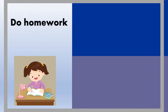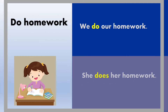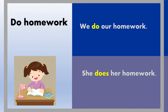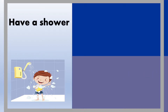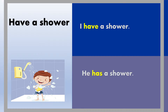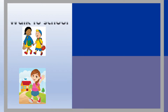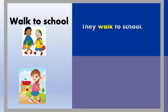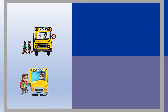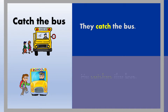Do homework: We do our homework. She does her homework. Have a shower: I have a shower. He has a shower. Walk to school: They walk to school. She walks to school. Catch the bus: They catch the bus. He catches the bus.